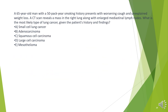A 65-year-old man with a 50-pack-year smoking history presents with worsening cough and unexplained weight loss. A CT scan reveals a mass in the right lung along with enlarged mediastinal lymph nodes. What is the most likely type of lung cancer, given the patient's history and findings?